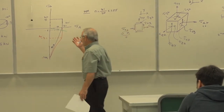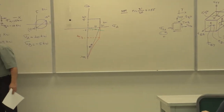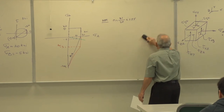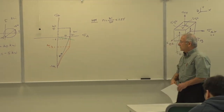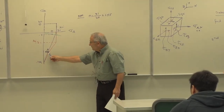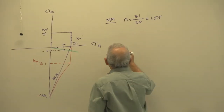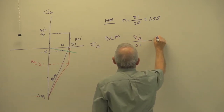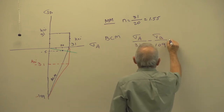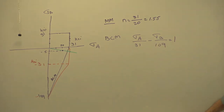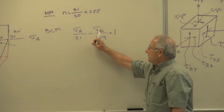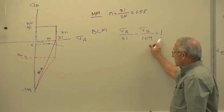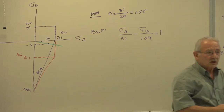To find the factor of safety for Brittle Coulomb-Mohr, we write an equation for the failure line: sigma A over 31 minus sigma B over 109 equals 1. You can check that equation — if sigma B is 0, sigma A is 31; if sigma A is 0, sigma B is minus 109. That's the line connecting the two points. The equation of the load line — the green line — is sigma B equals minus 5 over 20 times sigma A. We now solve these two together.